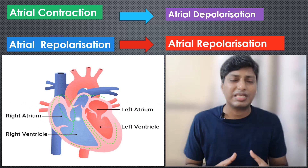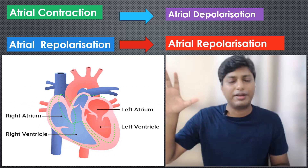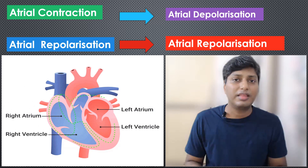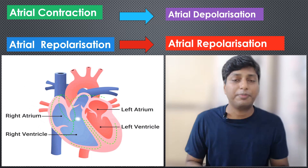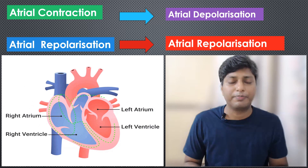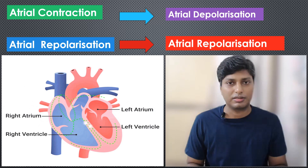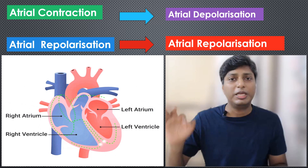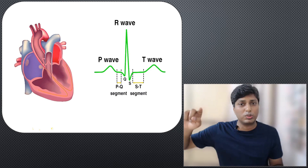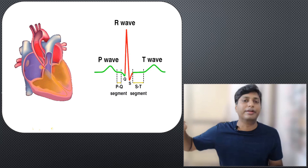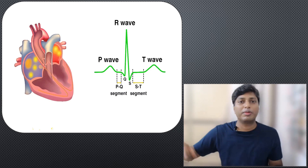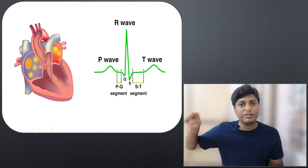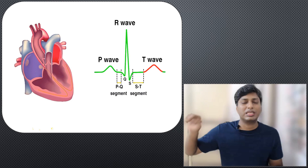As the impulse passes through the walls of the atrium, the walls of the atrium contract. This process of the impulse spreading throughout the atrium is known as atrial depolarization. Similarly, when the impulse spreads throughout the ventricles, that process is called ventricular depolarization. This impulse — passing first through the atria and then the ventricles — can be recorded by the instrument known as the electrocardiograph, and the resulting graph is called the electrocardiogram.